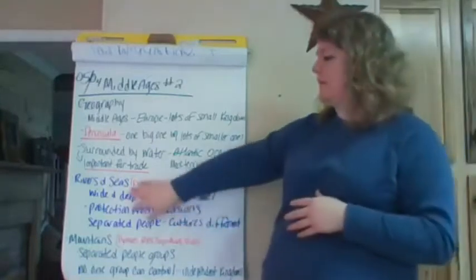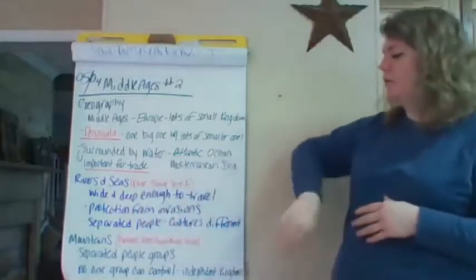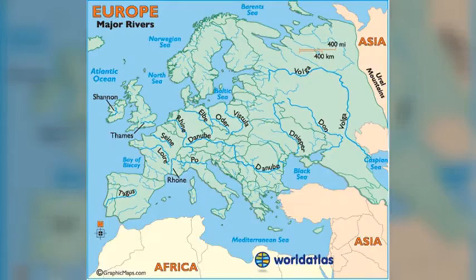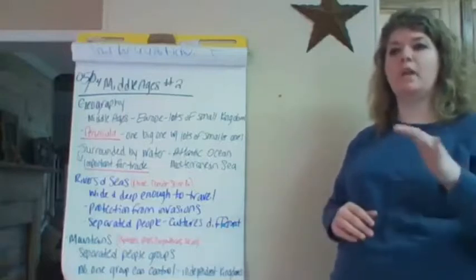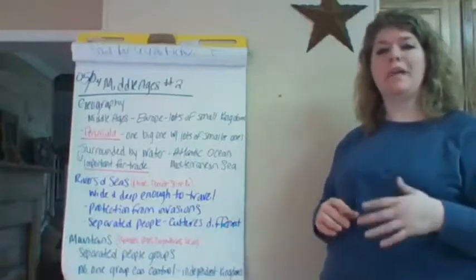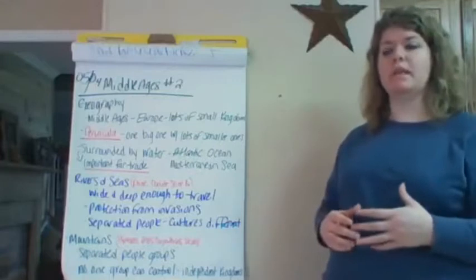Now some of the major rivers and seas, you're going to have the Rhine and the Danube, a couple of others. But one of the things that the rivers and seas get is that they are going to be wide enough and deep enough throughout Europe for ships and boats to travel up, and it's going to allow the people in Europe to be able to trade with those coming in.